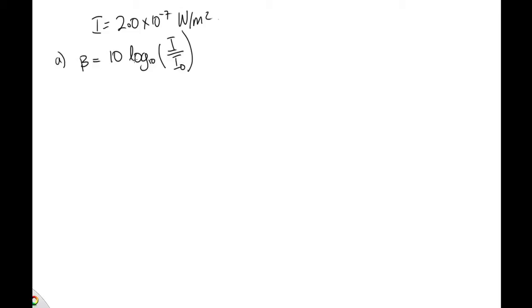The sound level is equal to 10 log to the base 10 I over I₀, where I₀ is the reference intensity. So this is 10 log to the base 10, 2 times 10 to the minus 7 over 10 to the minus 12. Solving that on the calculator, you end up with 53 decibels.